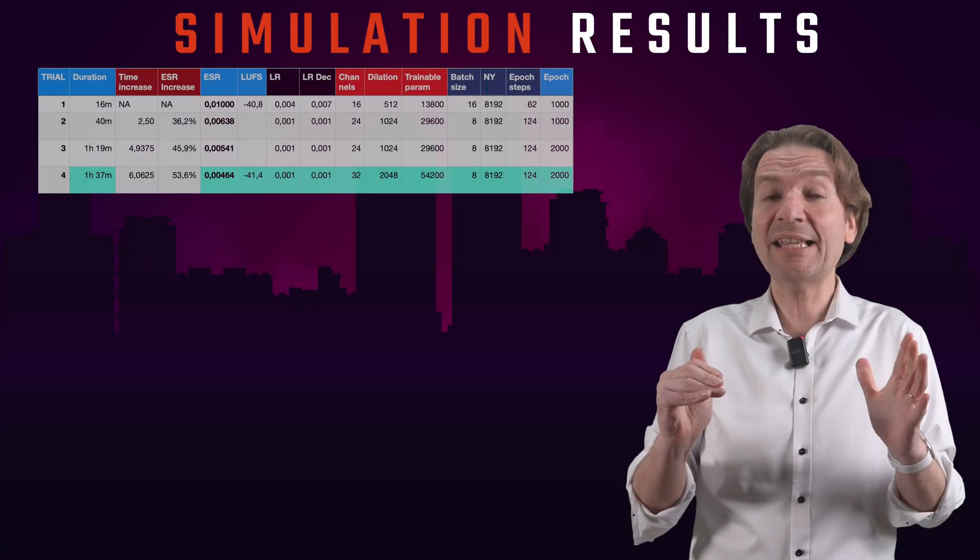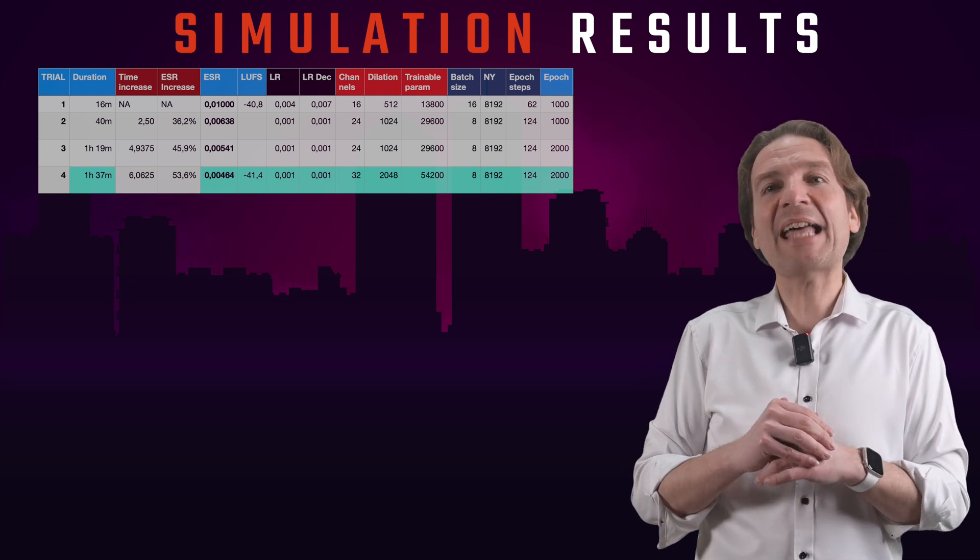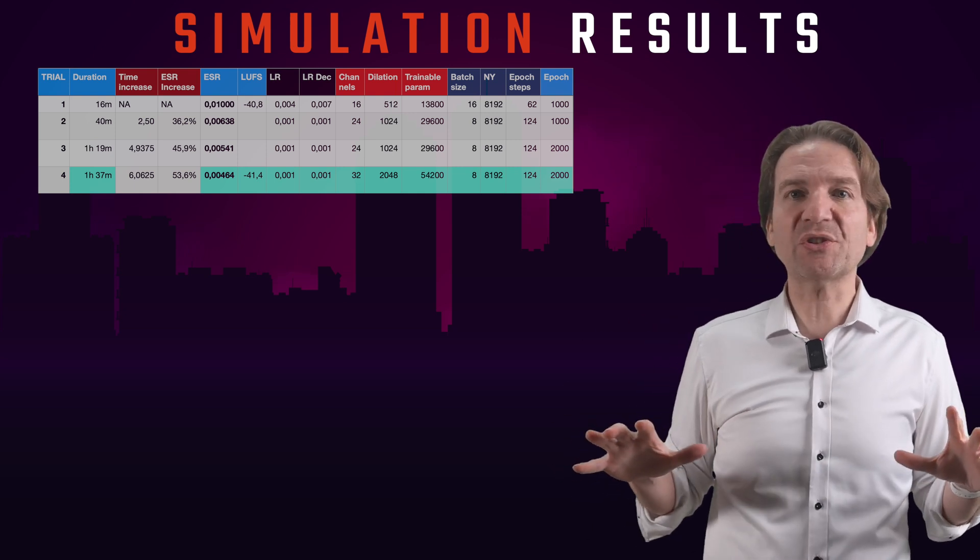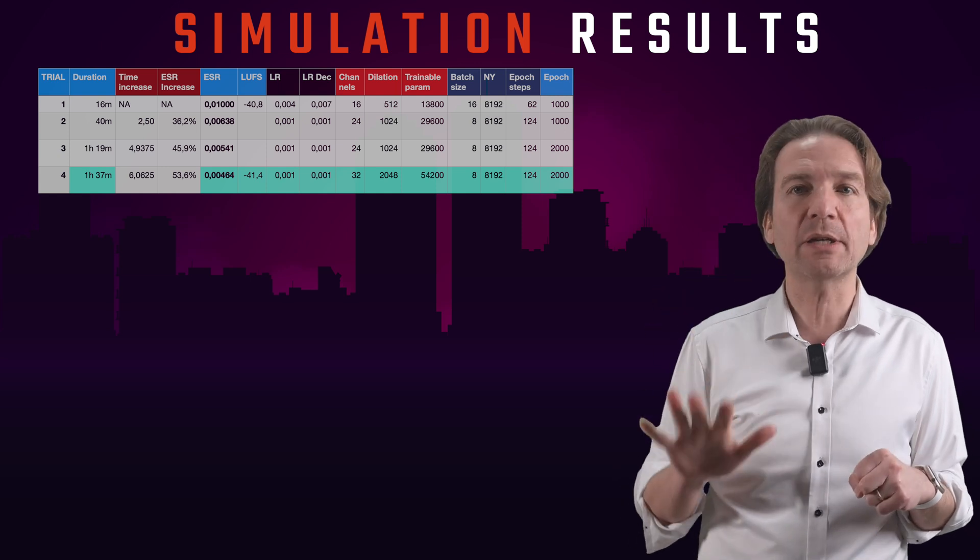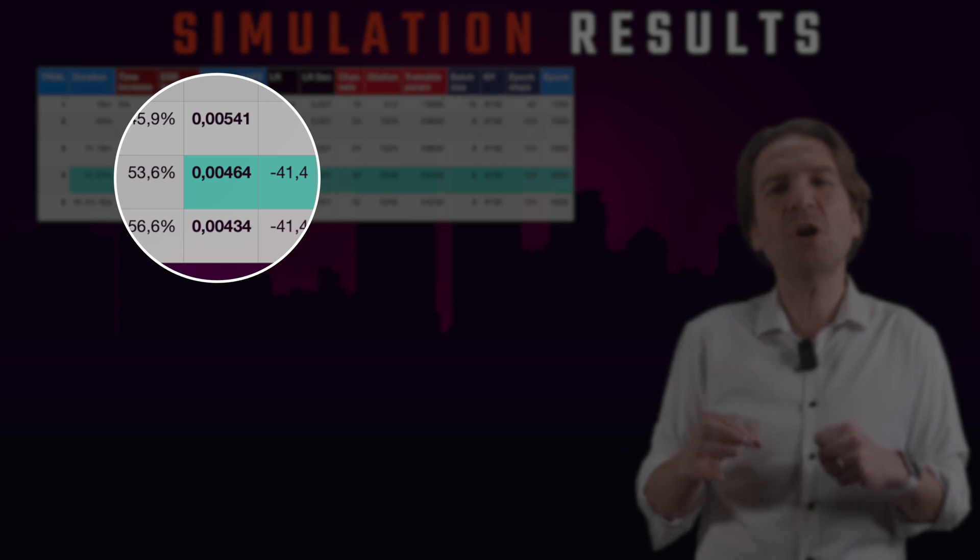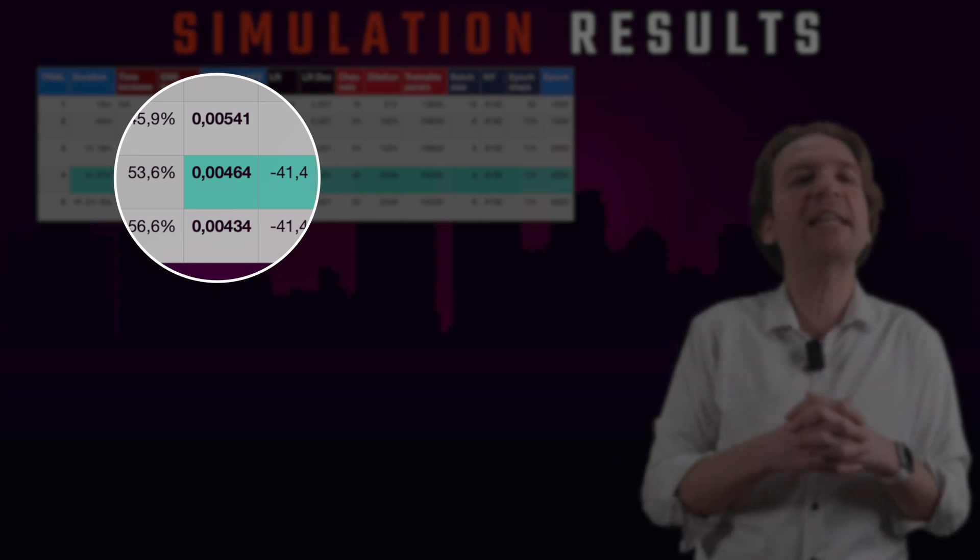So an increase of 57% with 6 times more processing time required. Let's now go crazy with the epochs training for 5000 cycles with our trial number 5. Well, we reached an ESR of 0.00434, not too much gain versus our trial number 4, but with a lot more computational time.